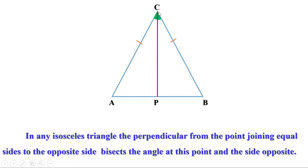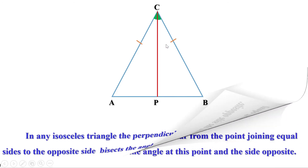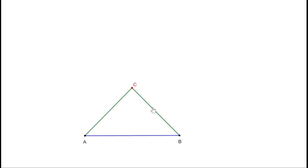We have seen that the perpendicular from point C to AB bisects AB and the angle at C. We can see it another way: the perpendicular bisector of AB passes through the point C, or through the point joining equal sides. Let us draw a line AB and make an isosceles triangle with AB as base. Suppose AC and BC are equal, so triangle ABC is an isosceles triangle and C is the point joining the two equal sides. Therefore the perpendicular bisector of AB passes through point C.